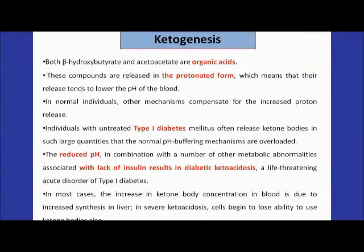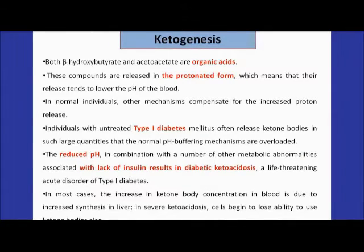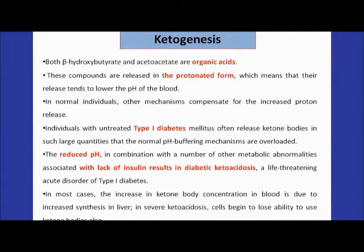In most cases, the increase in ketone body concentration in the blood is due to increased synthesis in the liver. In severe ketoacidosis, the cells of the body begin to lose the ability to use ketone bodies.